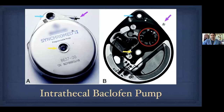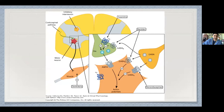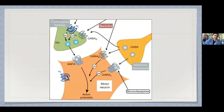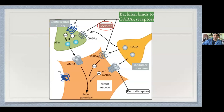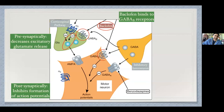Moving from rhizotomies to intrathecal baclofen pumps — pumps are tough. This is the baclofen molecule; it's basically GABA with a lipophilic chlorophenyl group attached to it. Looking at its mechanism of action: you've got the corticospinal pathway in green, the inhibitory interneuron in orange, and the motor neuron in darker orange. You give baclofen and it binds to GABA-B receptors. When it binds presynaptically on the corticospinal pathway neurons, it decreases excitatory glutamate release. It also acts postsynaptically inhibiting formation of action potentials. It basically turns down the motor neuron regardless of the abnormal milieu.